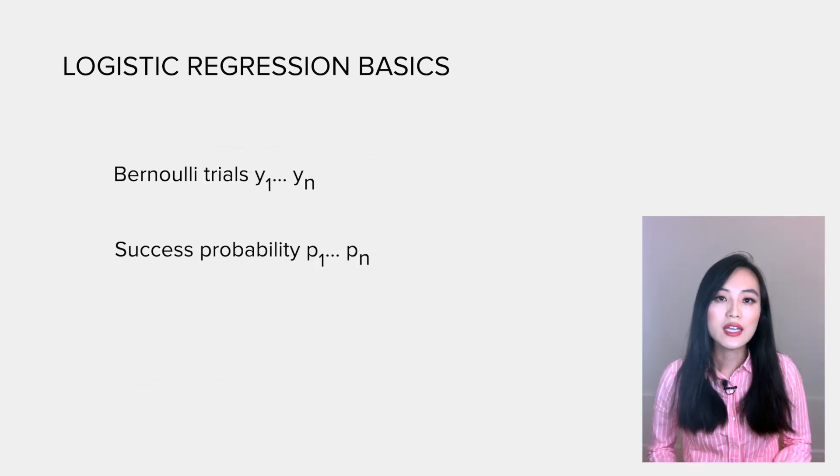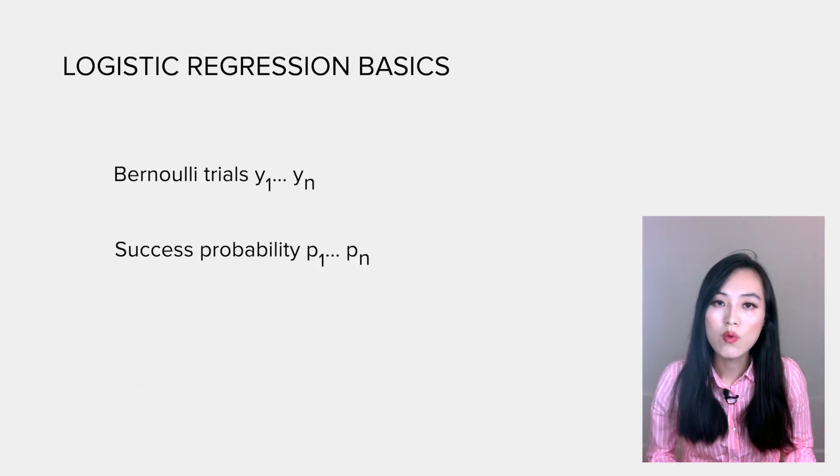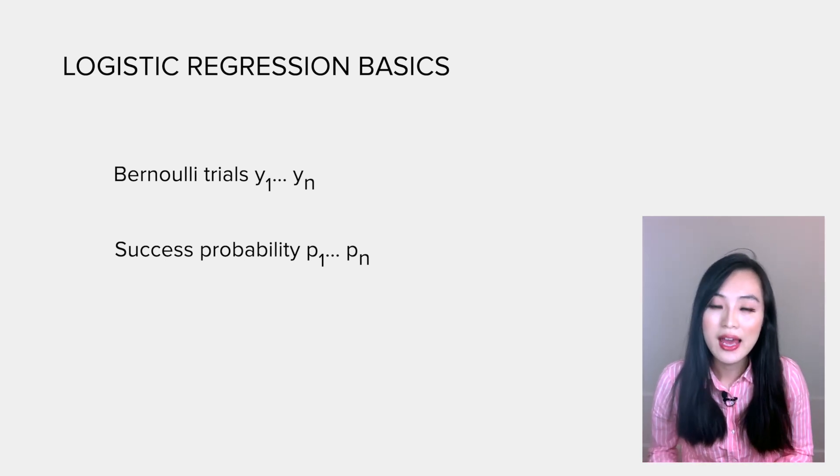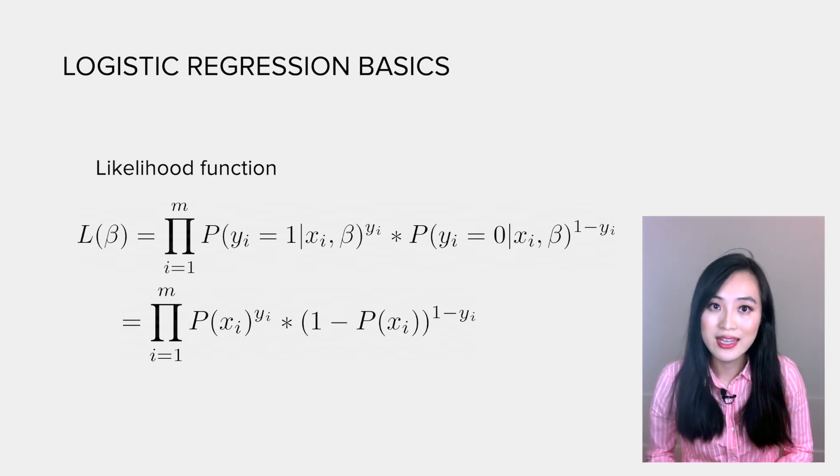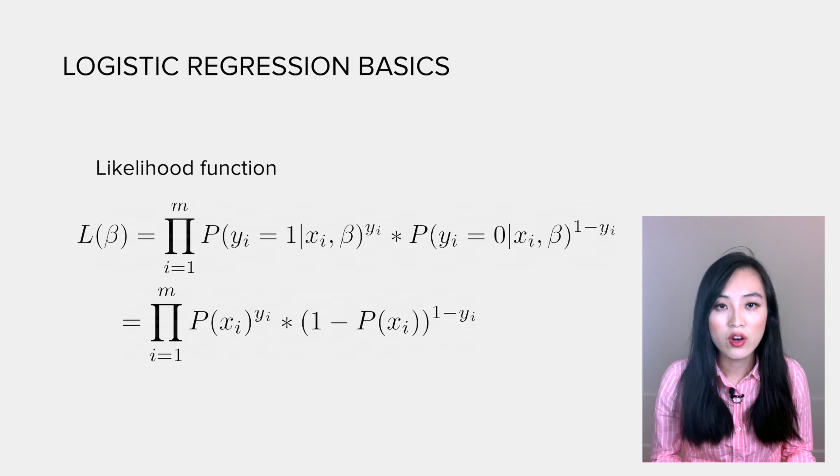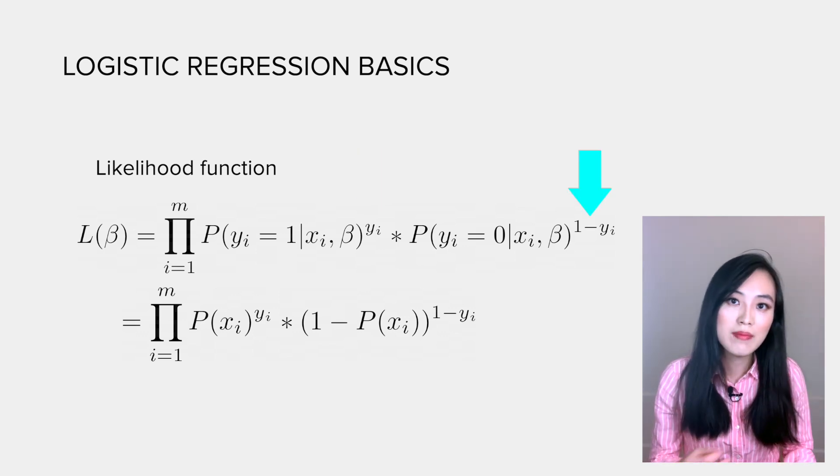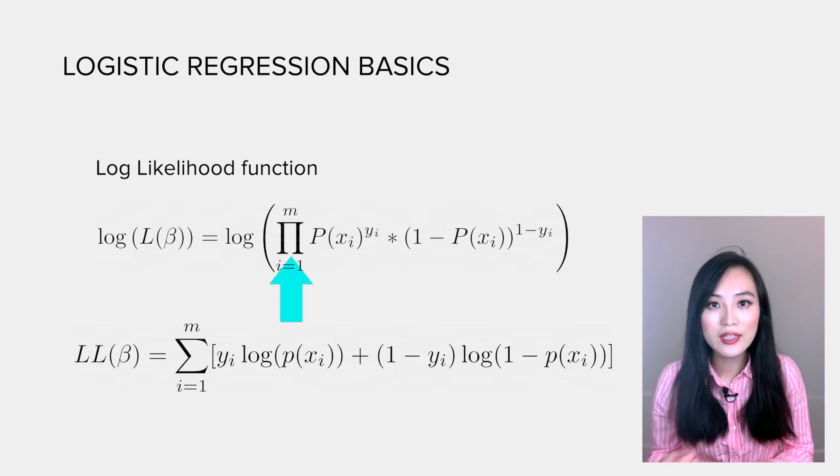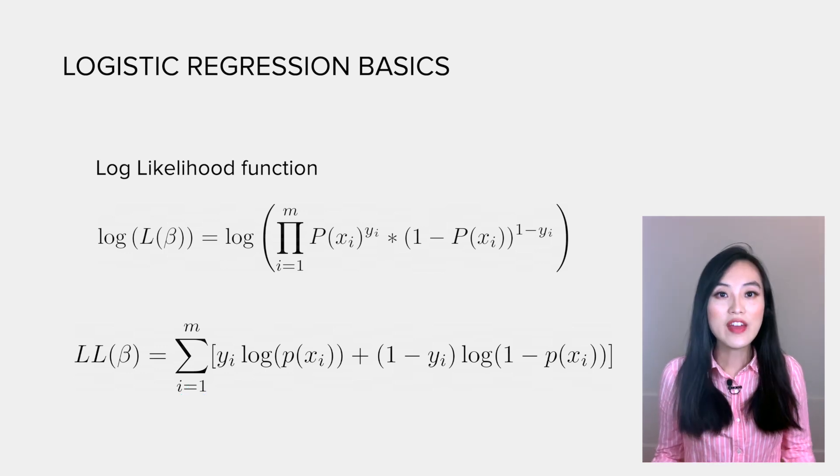Recall that in a sequence of Bernoulli trials y1 to yn, each trial has its own success probability pi. Then the likelihood function is this. Note that this form involves the power of yi and 1 minus yi, so we typically take a log of it to simplify the calculation. Log likelihood turns products into sums.